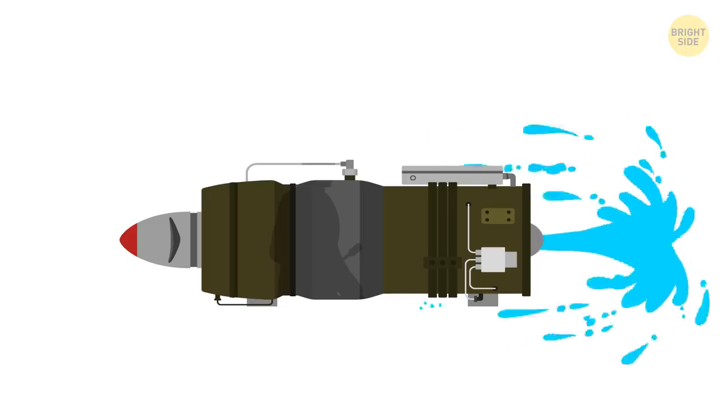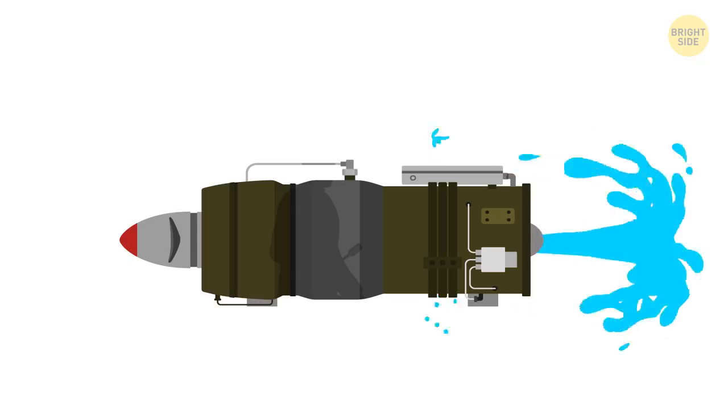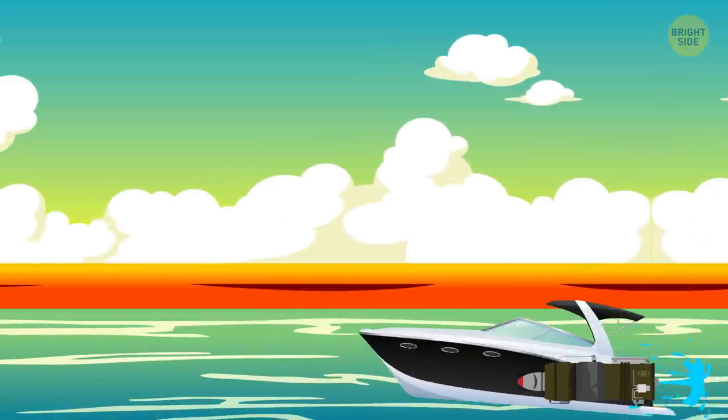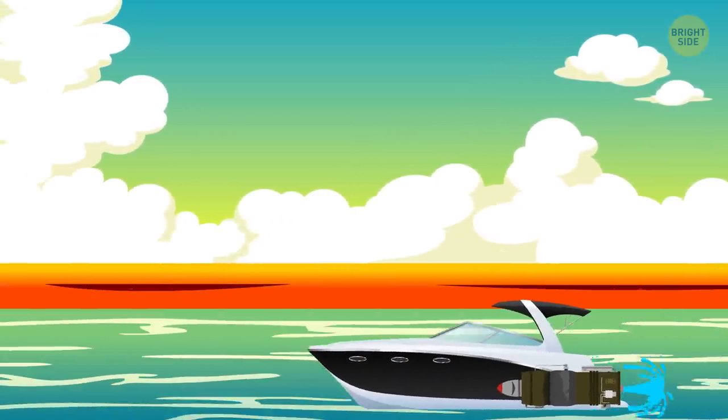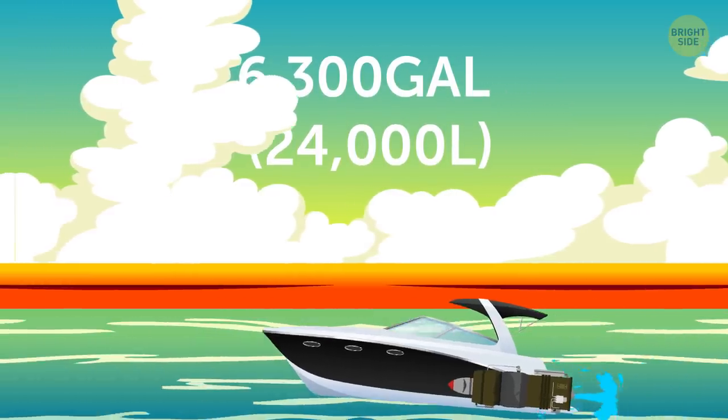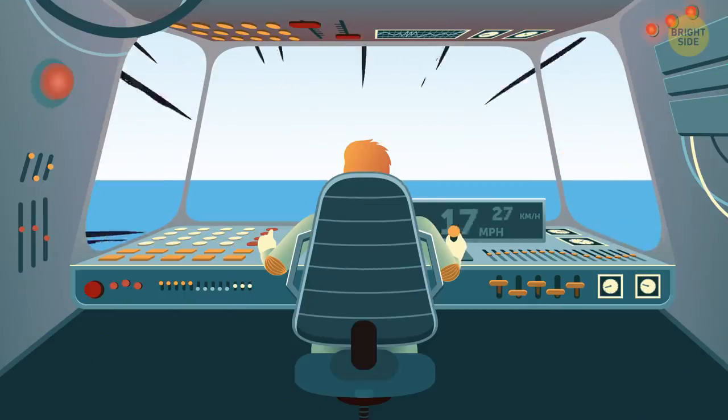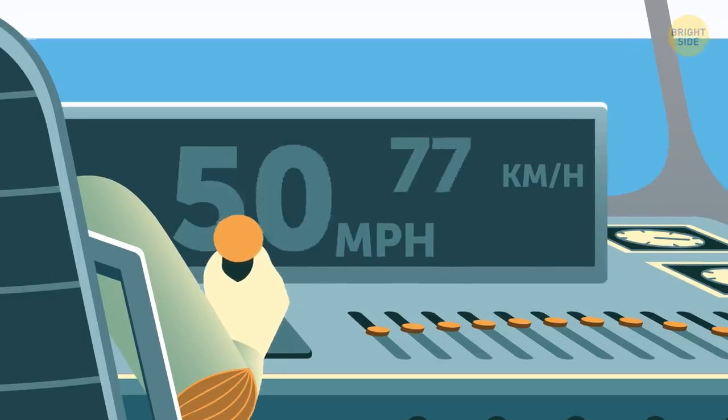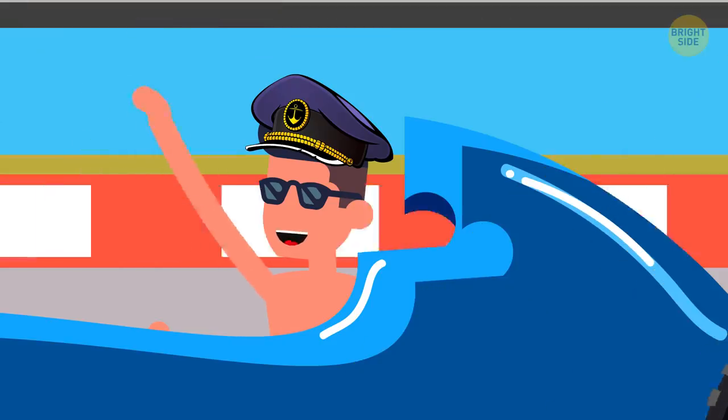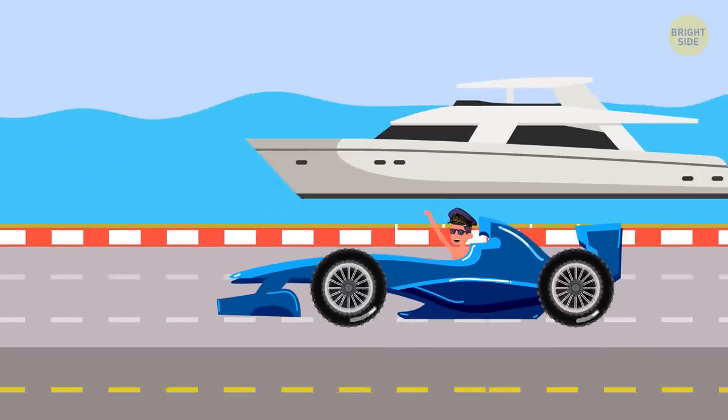These jets shoot powerful streams of water and propel the ship forward. Each jet stream shoots 6,300 gallons of water every second and provides enough thrust to speed the ship up to an unbelievable 58 knots. For such a huge vessel, this speed is almost unheard of.